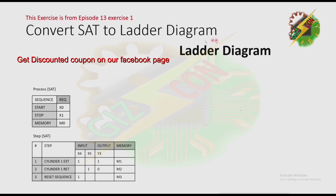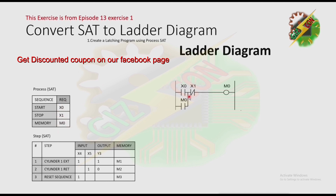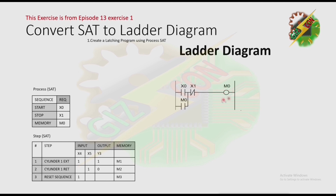Convert SAC to ladder diagram. First, create a latching program using the process SAC. We have start for x0, stop for x1, and memory m0. We put x0 here, then x1 and m0, so that when we energize x0, m0 will turn on, and when we energize x1, m0 will turn off.